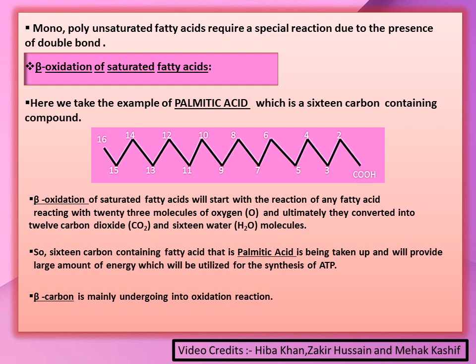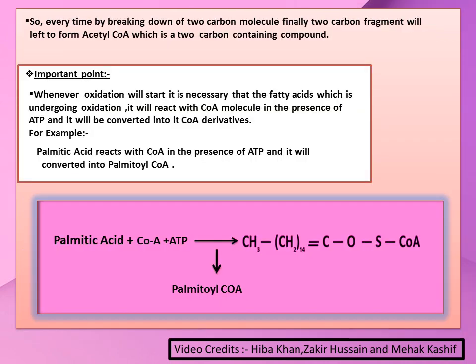The 16-carbon palmitic acid will provide a large amount of energy utilized for the synthesis of ATP. The beta carbon is mainly undergoing oxidation — as we have already discussed the position of beta carbon in class. Every time, by breaking down two carbons, a two-carbon fragment is released to ultimately form acetyl-CoA.